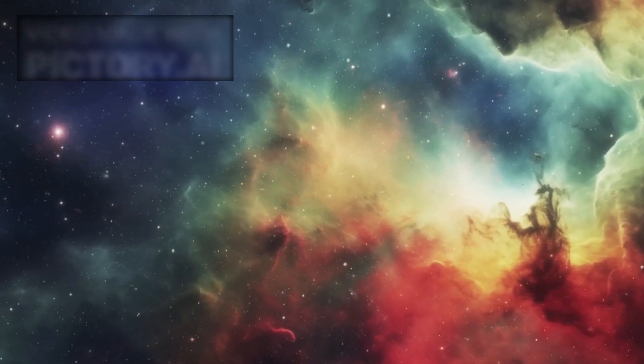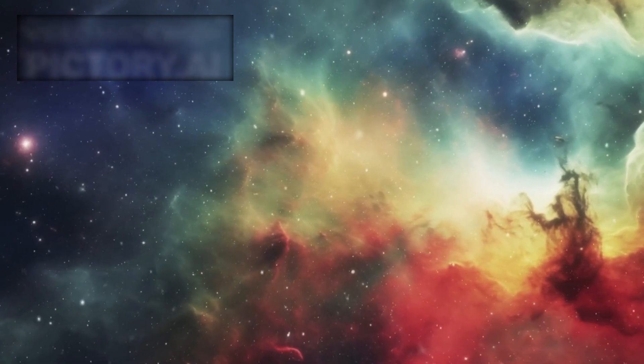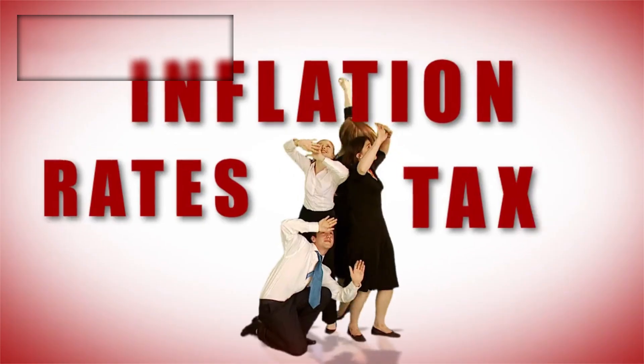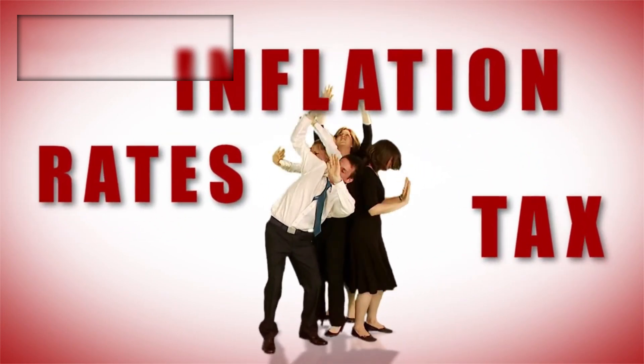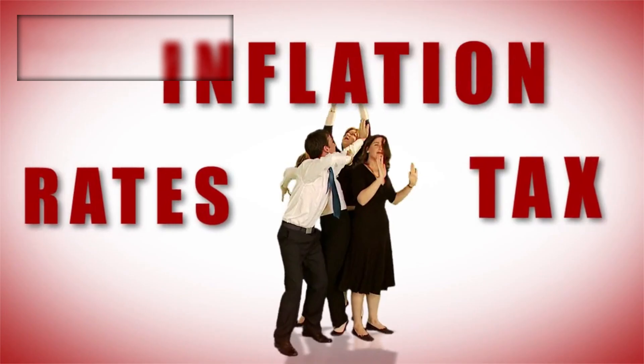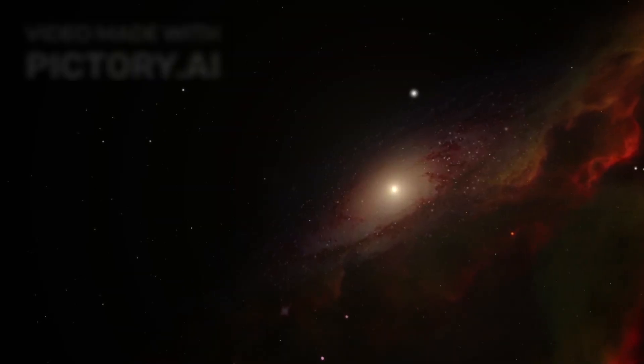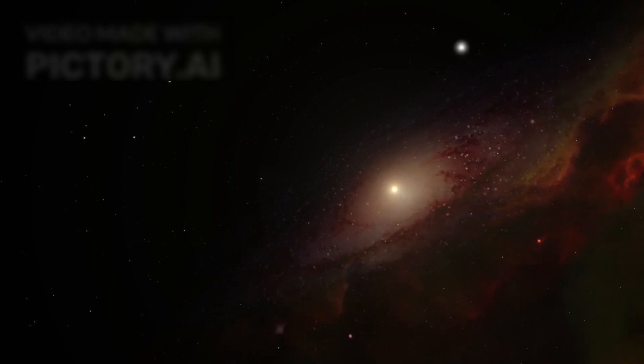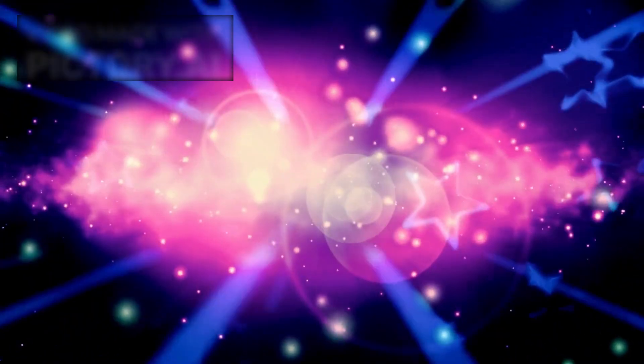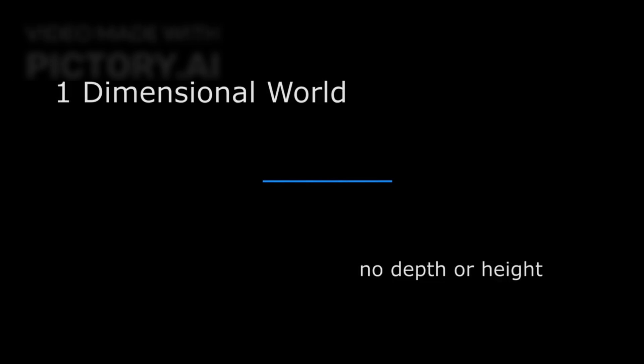Consider this. Our observable universe spans about 46 billion light years in every direction. But due to the accelerated expansion, we are only able to access a tiny fraction of it, roughly 6% of all galaxies. The remaining 94% is receding faster than the speed of light relative to us, and thus, beyond our ability to ever reach or communicate with. Every second, an estimated 20,000 to 60,000 stars cross this unreachable boundary. Though the light they emitted in the past may still be on its way, any new light from them will never arrive. It's as if the universe is gradually being erased in real time.